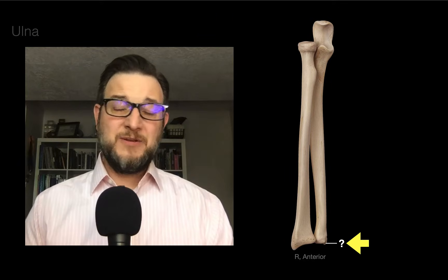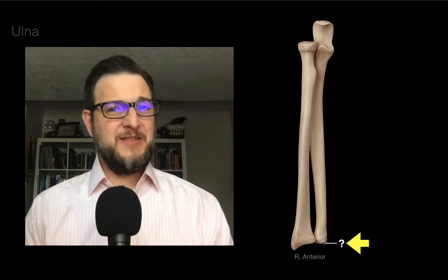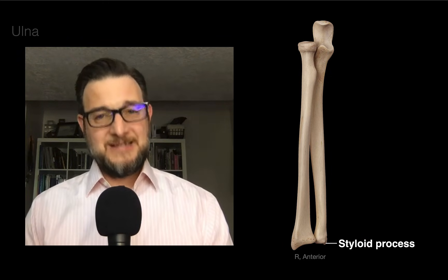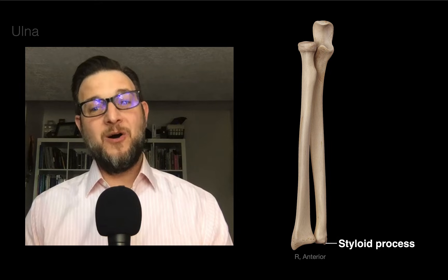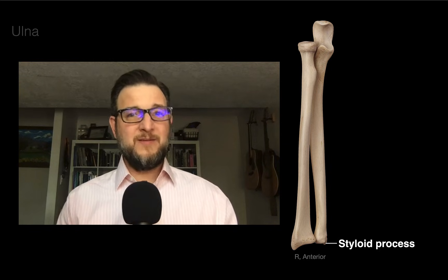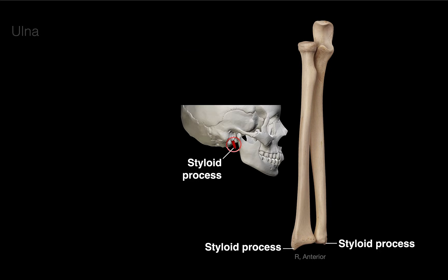This last landmark is a pointy process — anatomists said it looks like the tip of a pen, so we call it the styloid process of the ulna. This is where ligaments such as the ulnar collateral ligament of the wrist and the radial ulnar ligaments attach. Don't forget there's also a styloid process of the radius and of the temporal bone — all of them look pointed.